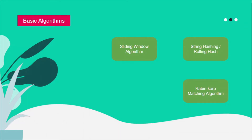The prerequisite for these algorithms is almost nothing — you just need simple implementation knowledge. If you're implementing in Python, you need basic programming experience. For string hashing, rolling hashes, and Rabin-Karp, the prerequisite is modular arithmetic, because for calculating rolling hashes we need knowledge of modular inverse and modular arithmetic. In my number theory playlist you can go and check out those topics.